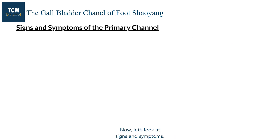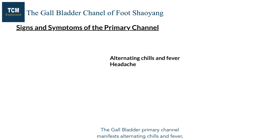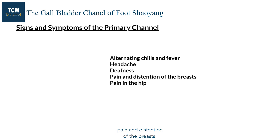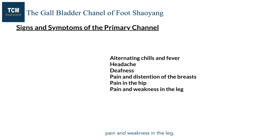The gallbladder primary channel manifests alternating chills and fever, headache, deafness, pain and distension of the breast, pain in the hip, and pain and weakness in the leg.